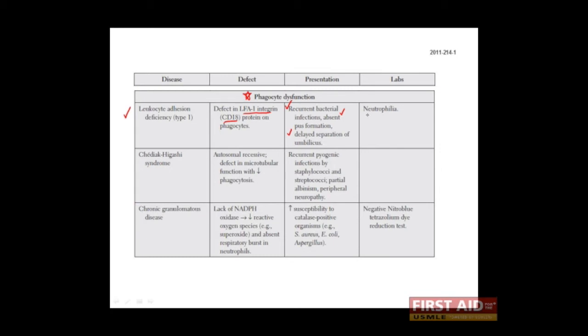Finally, because neutrophils are poorly recruited from the circulation, they tend to increase in numbers there. So in this disease, you would expect to find neutrophilia, which is higher than normal levels of neutrophils in the blood.